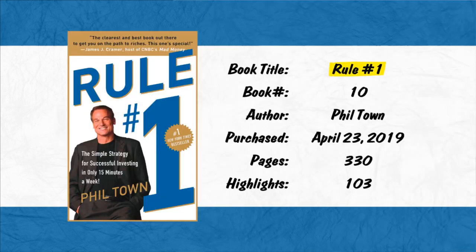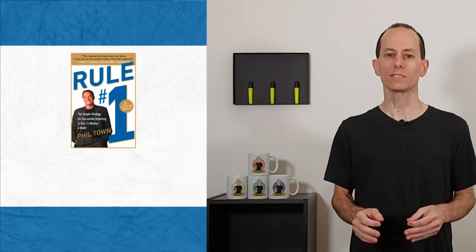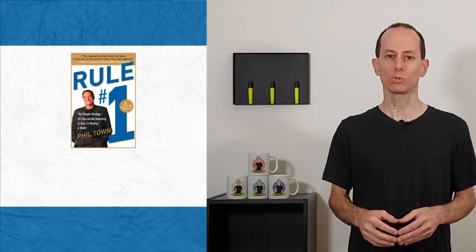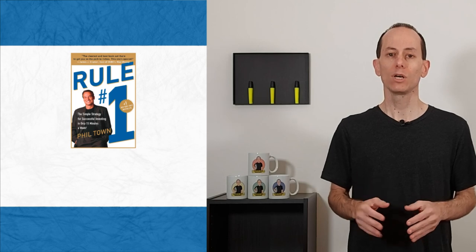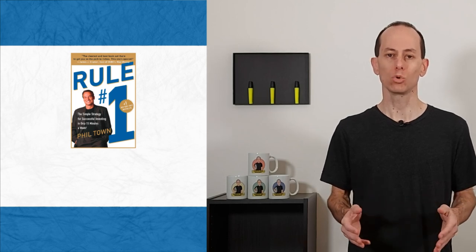Rule 1 was the tenth investing book I read. Written by Phil Town in 2006, I purchased it on April 23, 2019. It has 330 pages, and I made highlights on 103 pages. Following on from Invested, it was only natural to then read Phil's books, and in a few weeks I'll also do Payback. But for now, let's look at some highlights from Rule 1.